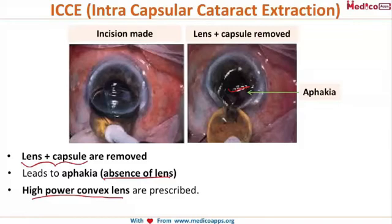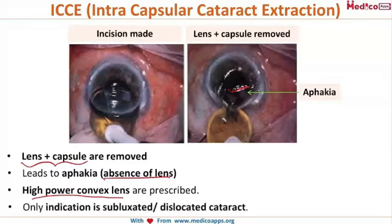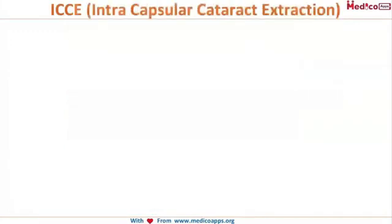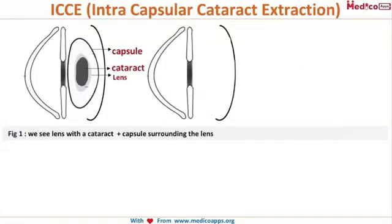Because of these very bad adverse effects of high power convex lenses, the only indication for ICCE is a subluxated or dislocated cataract — that is, when the lens is not present in its normal position. Only subluxation or dislocation is an indication for ICCE.